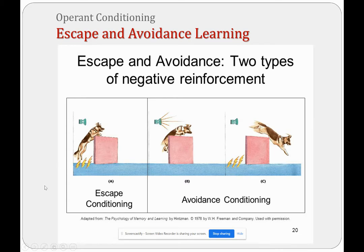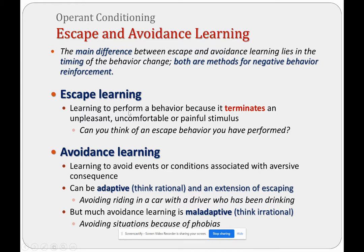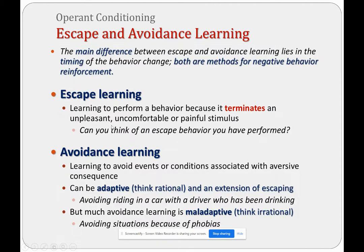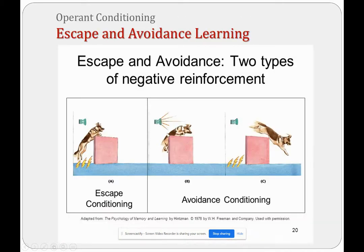Escape conditioning is where the dog is escaping from an unpleasant stimulus. Escape learning is learning to perform a behavior that terminates an unpleasant, uncomfortable, or painful stimulus. The dog is going to escape it — it's not avoiding because it's already feeling it. Avoidance is learning to avoid events that have that same aversive consequence because you've gone through that situation and had to escape — eventually you learn to avoid it.